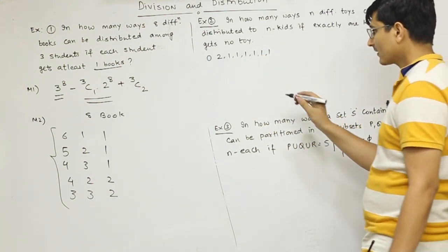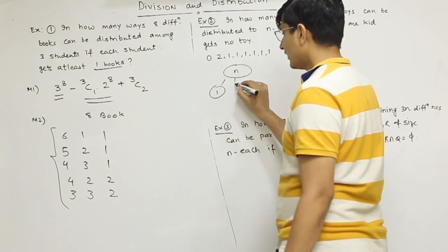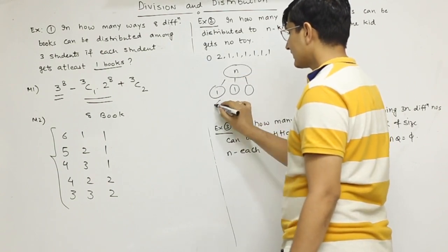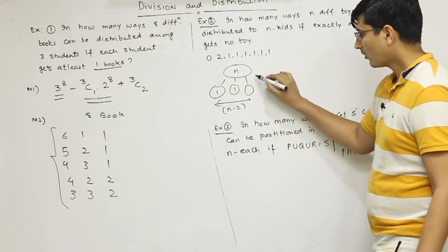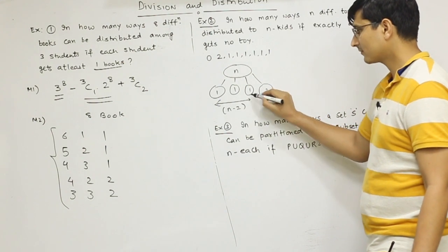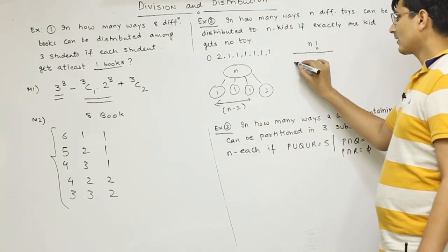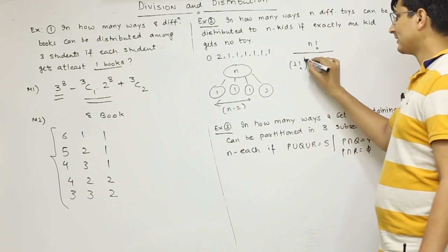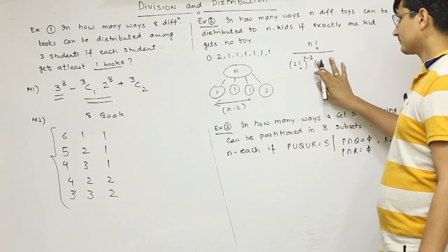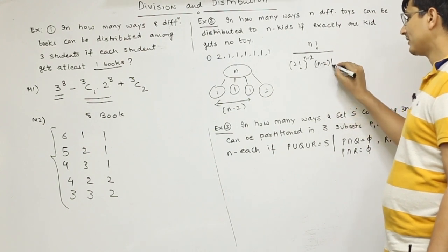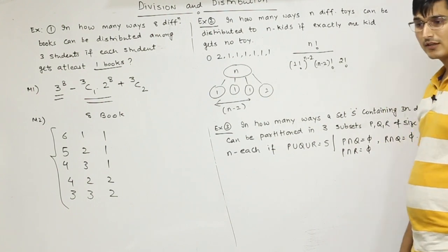You can do this: take n toys and make groups of 1-1, making n-2 groups, and one group will have 2 toys. The formula is n factorial divided by (1 factorial)^(n-2) times (n-2) factorial, because we repeat 1 factorial n-2 times, divided by 2 factorial since one group has size 2.